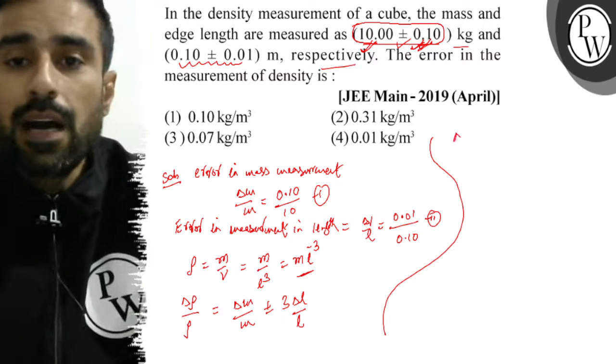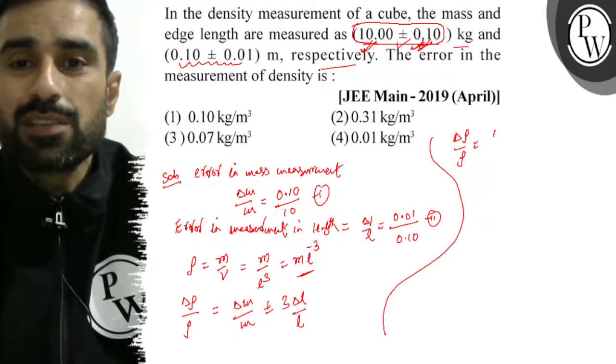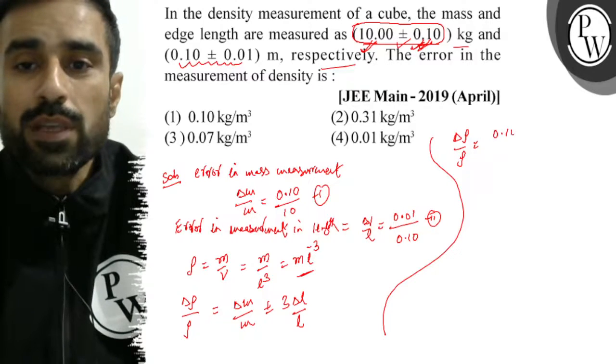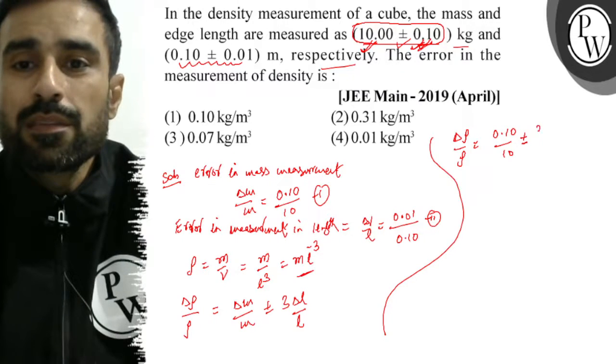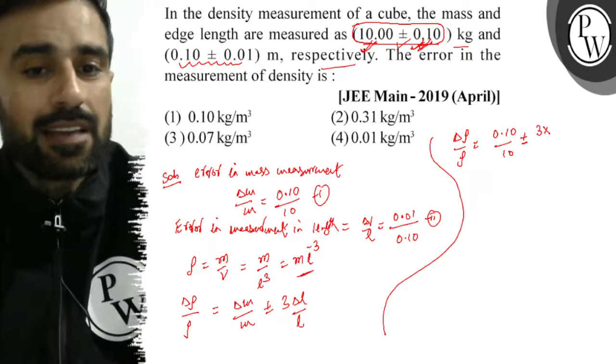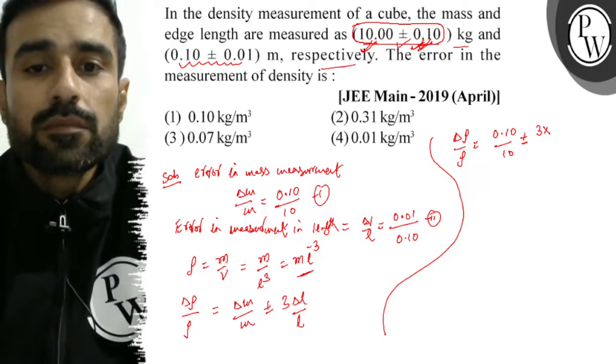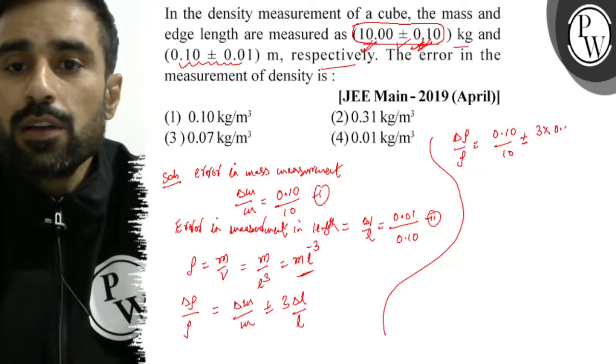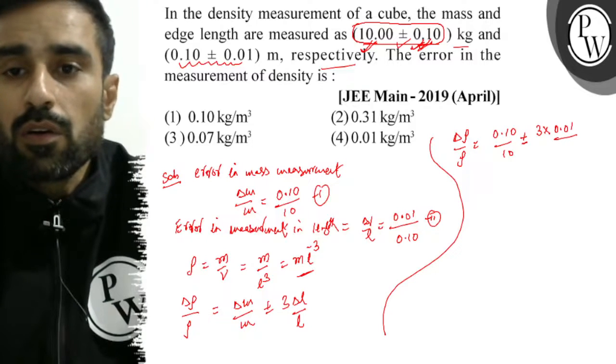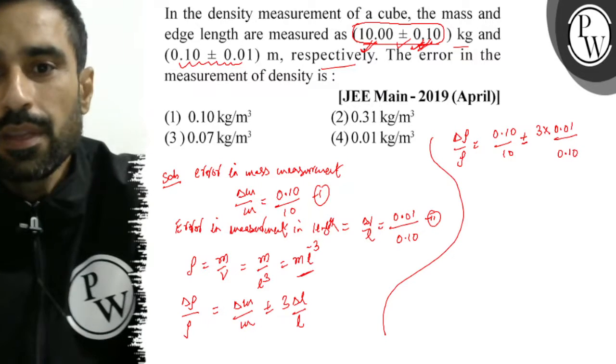So, delta rho over rho equals delta m over m is 0.10 divided by 10, plus or minus three times delta l by l value is from equation number 2, that is 0.01 over 0.10.